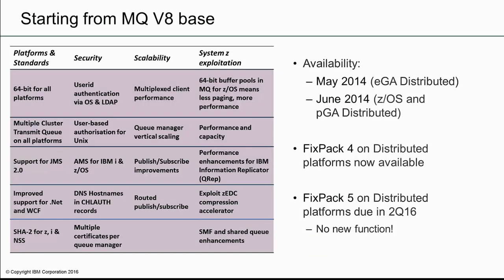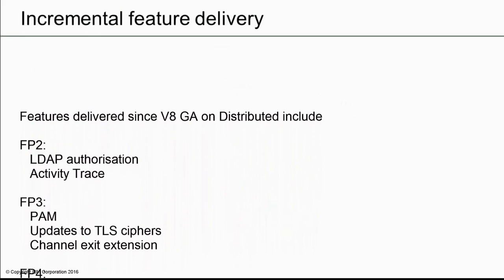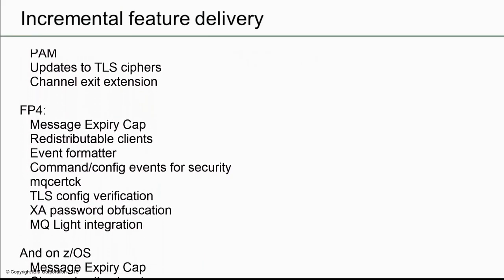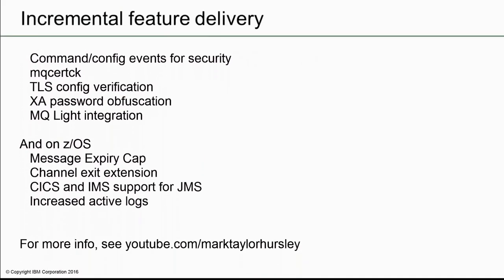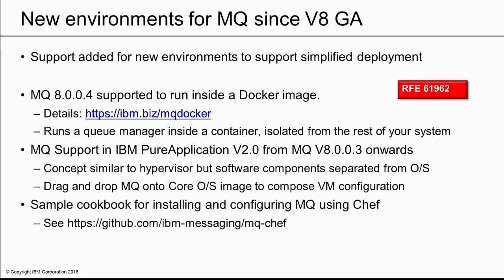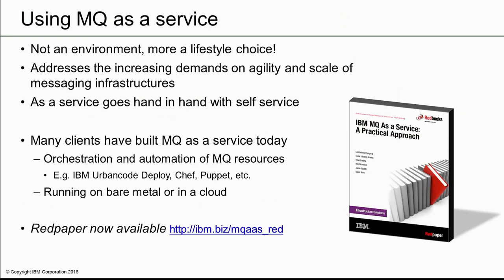Moving on to the product features, I'm going to start with version 8. That was released in 2014 and had a wide range of enhancements. If you don't know the details of that release, you might want to look at the version 8 Redbook that drilled down into many of them. Most of the fix packs released to date on version 8 have included some new function. Here's a list of many of them, and details are available elsewhere on those new features. As well as new function, there's also been support for new environments such as Docker and Chef, and a red paper showing how MQ fits into the as-a-service world, with fully worked examples of using an automation tool to manage MQ software and configuration.